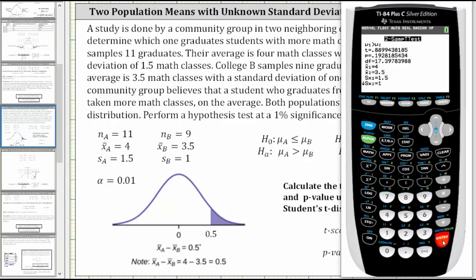We have a t-score of approximately 0.8899 and a p-value of approximately 0.1928. Let's go ahead and record this information.